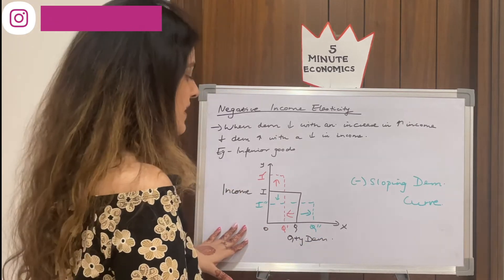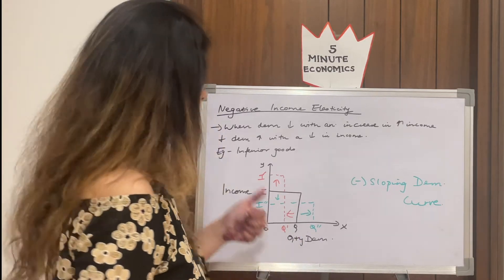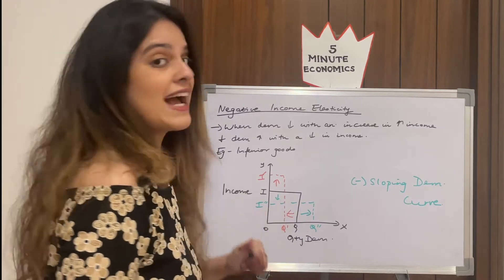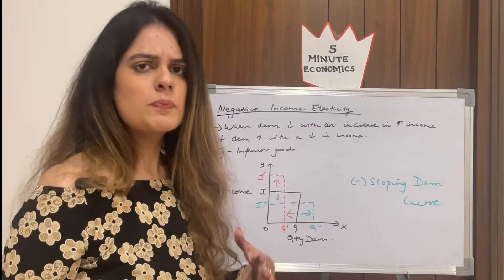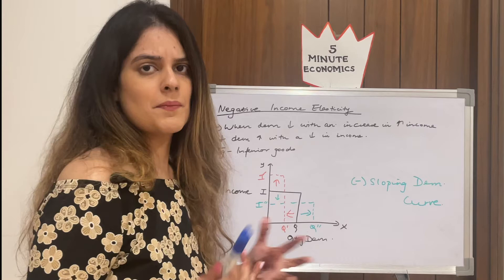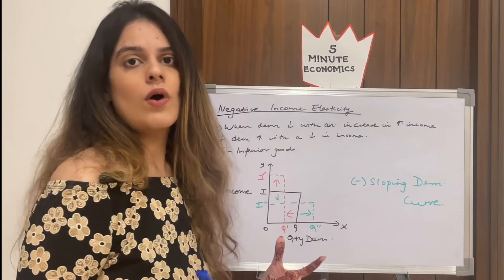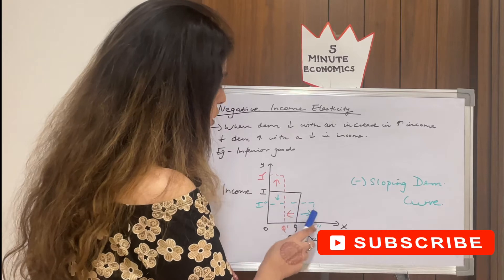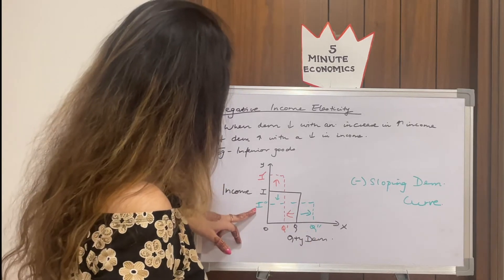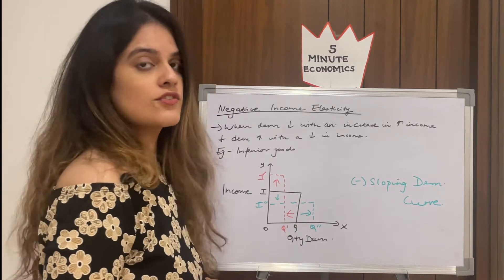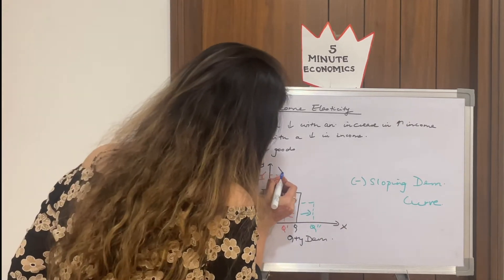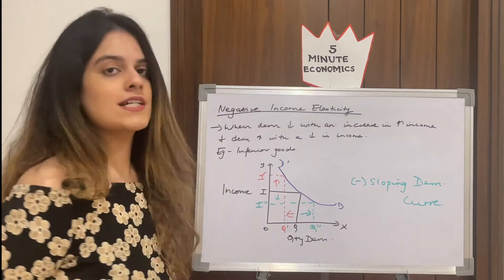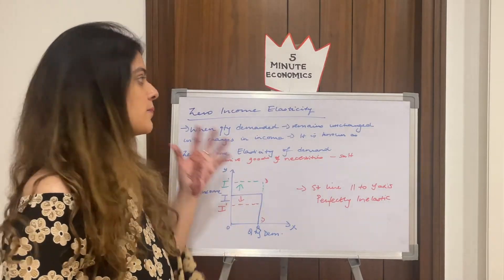This is also explained through a graph. Quantity demanded is on the x-axis and income on the y-axis. Initially income is I and quantity demanded is Q. When income rises to I-dash, quantity demanded falls to Q-dash, as we switch to a superior good. When income falls to I-double-dash, quantity demanded rises. Joining these points gives a negatively sloping demand curve DD, reflecting the inverse relationship between the two.